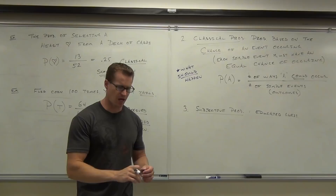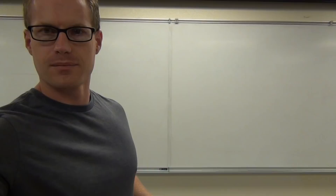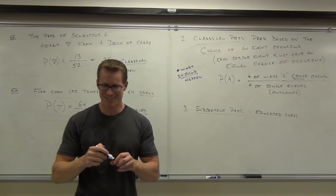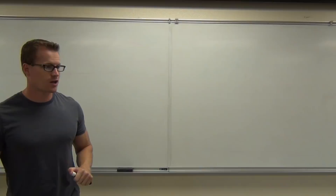For subjective, use the doctor example: you have an 80% chance of being okay. So to recap what we talked about today: observed probability, classical probability, and subjective probability. Last time we did some examples of how to calculate these. Let's continue that.